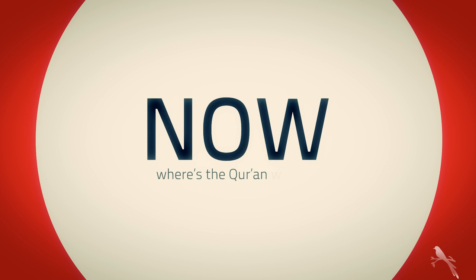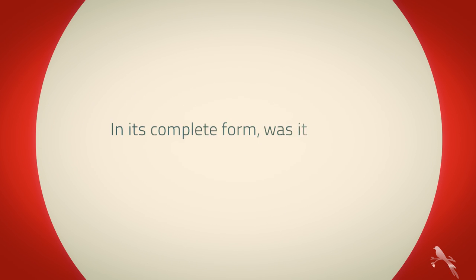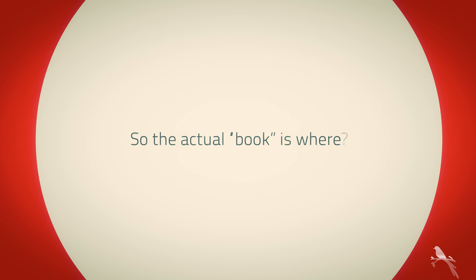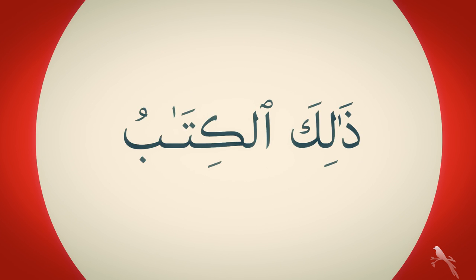Now, where is the Quran written? Where is it written? Was it already written when it was being revealed? In its complete form, was it already in existence with who? So the actual book is where — near or far? So it's appropriate to say 'that book,' because that's where it's written.